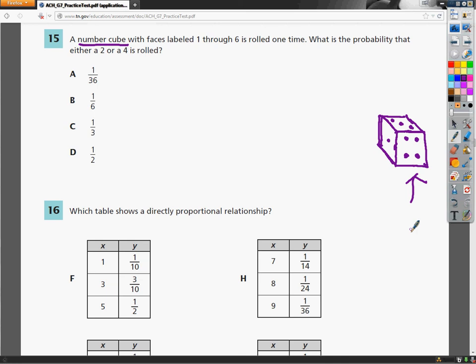They say the faces are labeled 1 through 6. So you've got 1, 2, 3, 4, 5, 6. I'm assuming they're the little dots, but it's possible they're numbers. Who knows? It doesn't matter. What is the probability that either a 2 or 4 is rolled?